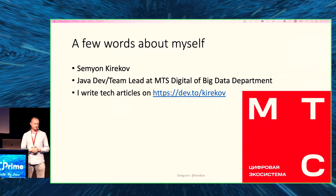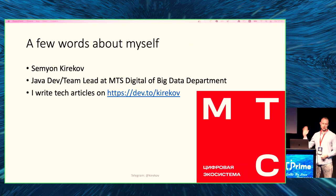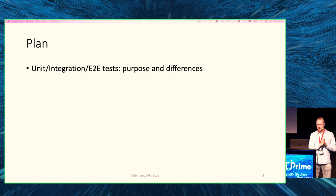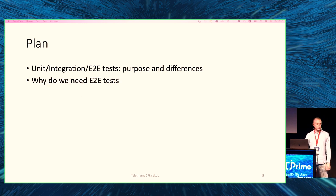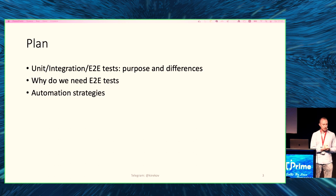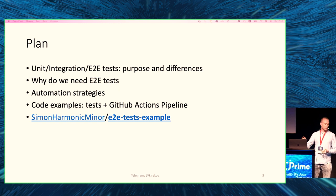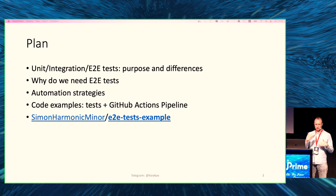You can find my links — LinkedIn, Twitter, Telegram, and so on. There will be a lot of links during this talk; you don't have to memorize them because the last slide has a QR code you can scan to download the slides. The plan: I'll quickly explain the difference between unit, integration, and E2E tests, their purpose and differences. Why do we need E2E tests? What are the automation strategies to run them? And of course there will be a lot of code examples — tests plus a tuned GitHub Actions pipeline. The entire code is available via a link you can check out later.